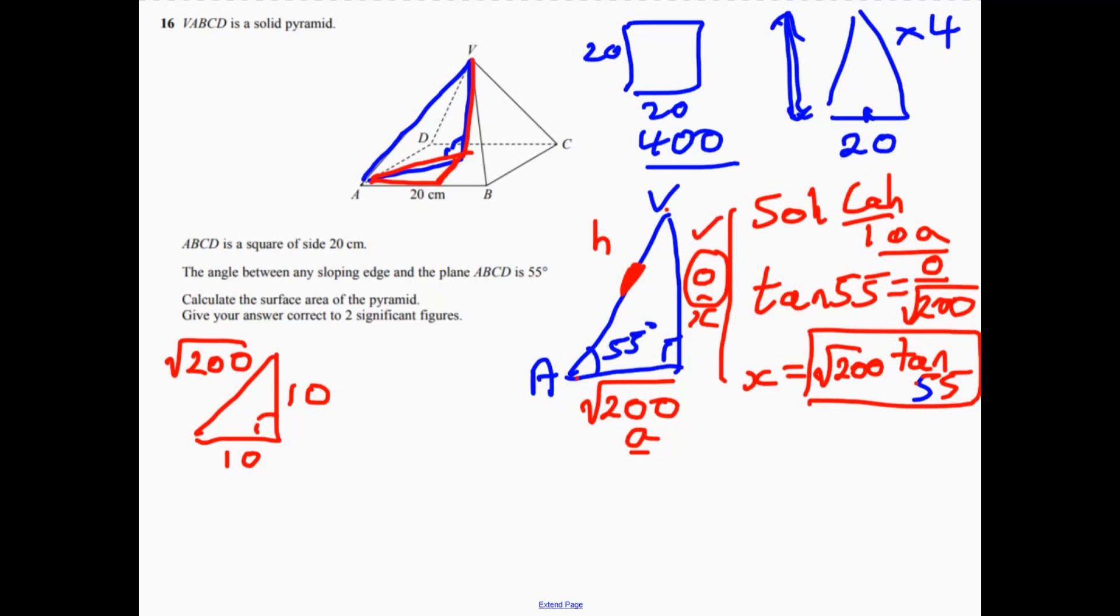Now remember, what I'm really interested in is I need this length here. I need to look at this triangle here. I need this length across here. That's the length that corresponds to the height that we're actually interested in. And again, it's a right-angled triangle.